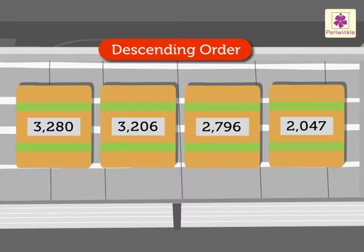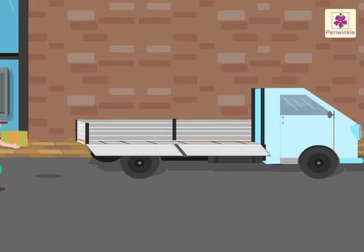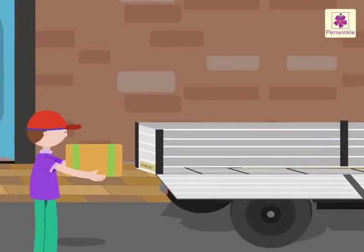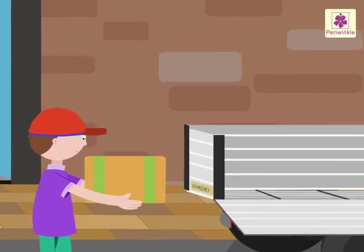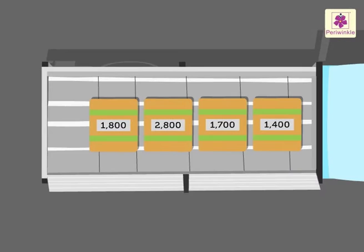The descending order is: three thousand two hundred eighty, three thousand two hundred six, two thousand seven hundred ninety six, and two thousand forty seven. Now let us fill another tempo in the same way.